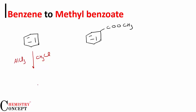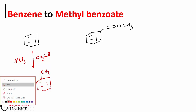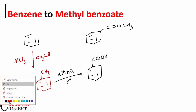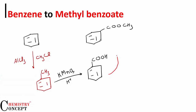The Friedel-Crafts alkylation will result in methylbenzene (toluene). This methylbenzene is then treated with KMnO₄ in acidic medium, which converts the methyl group into a carboxylic acid.